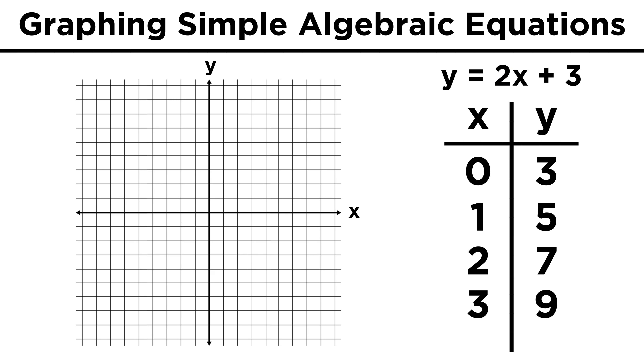But this relationship is understood more effectively if we draw the graph. Here are the first three points we mentioned, with their ordered pairs listed. Remember, it's the x value first, then the y value. We connect the dots, and there is our line.